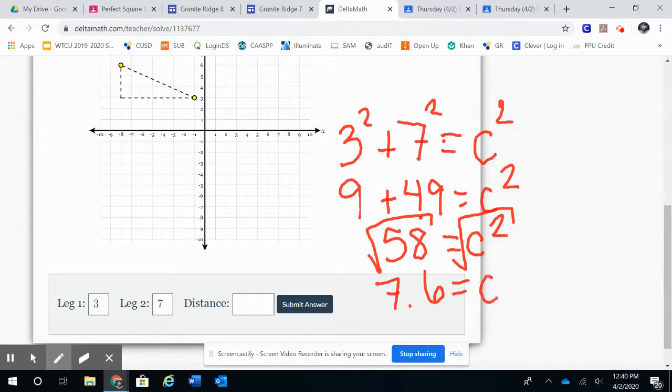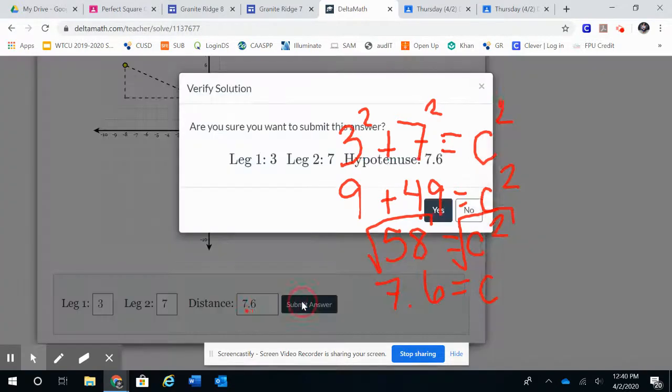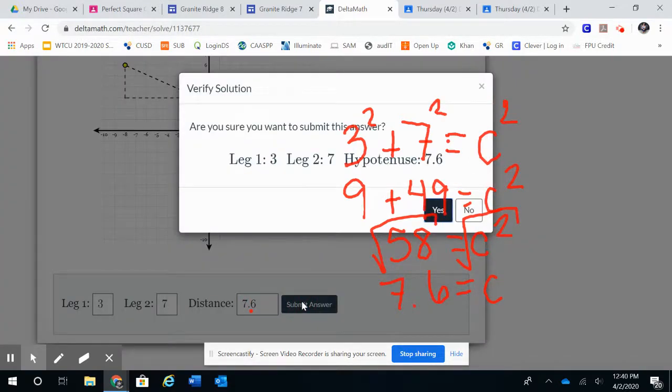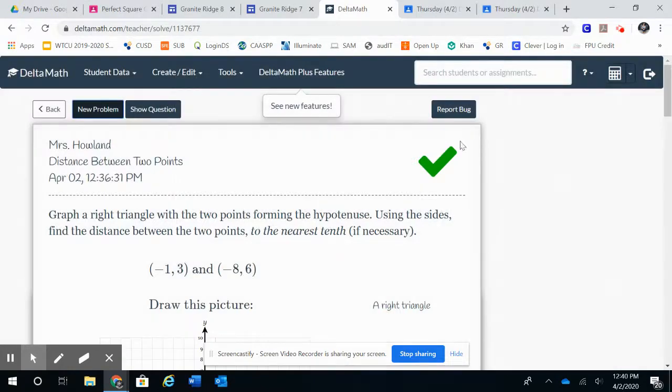So my distance here is seven point six. I'm going to submit my answer. And here's my check mark, I got it correct, and then you would go on to your new problem from there.